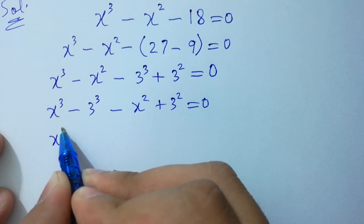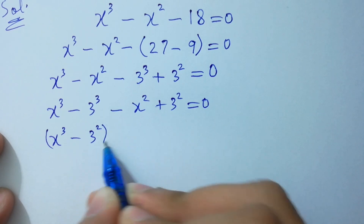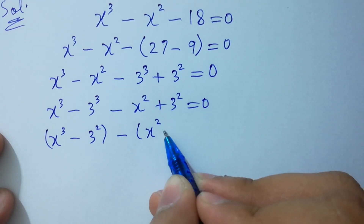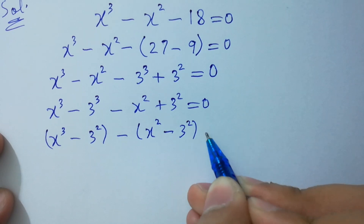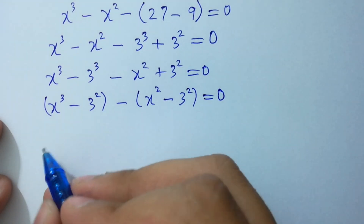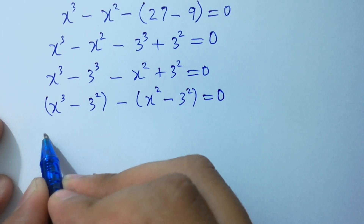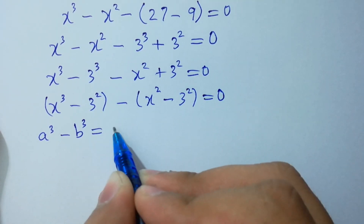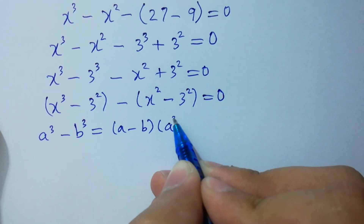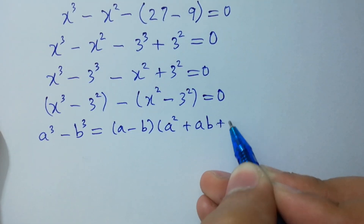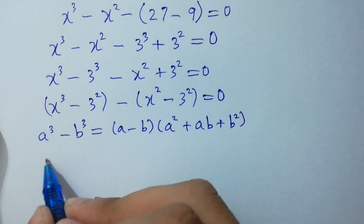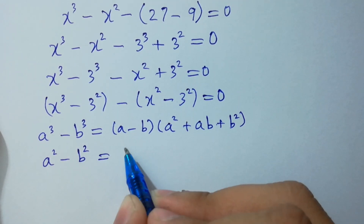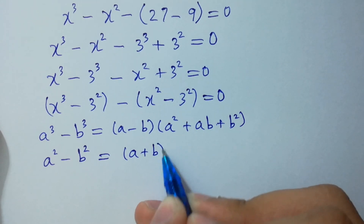Here x cubed minus 3 cubed. We can combine: minus x squared minus 3 squared equals 0. As we know, a cubed minus b cubed equals (a minus b)(a squared plus ab plus b squared), and a squared minus b squared equals (a plus b)(a minus b).